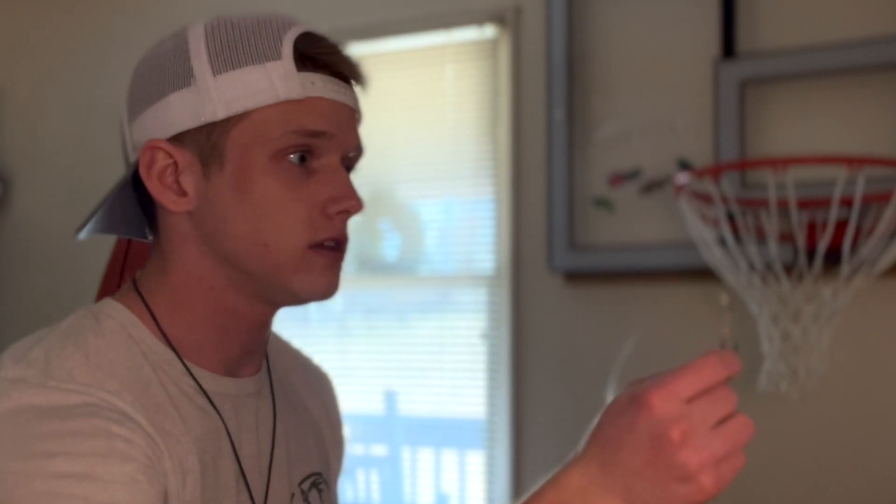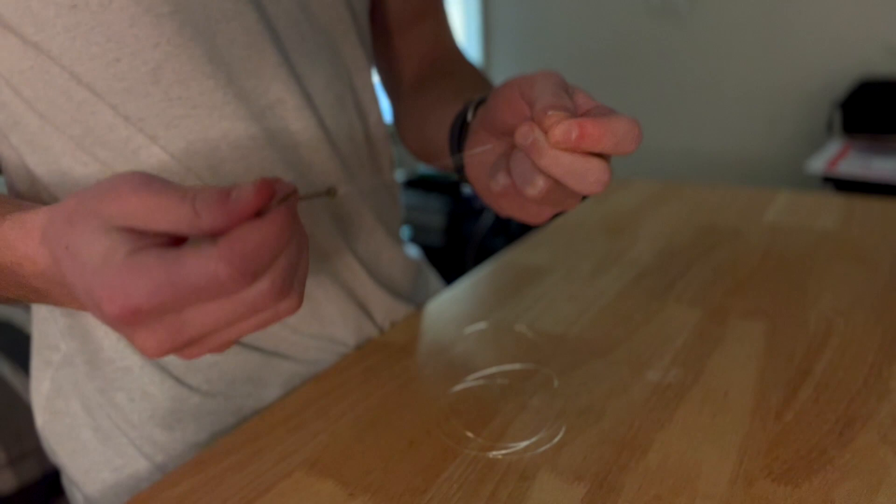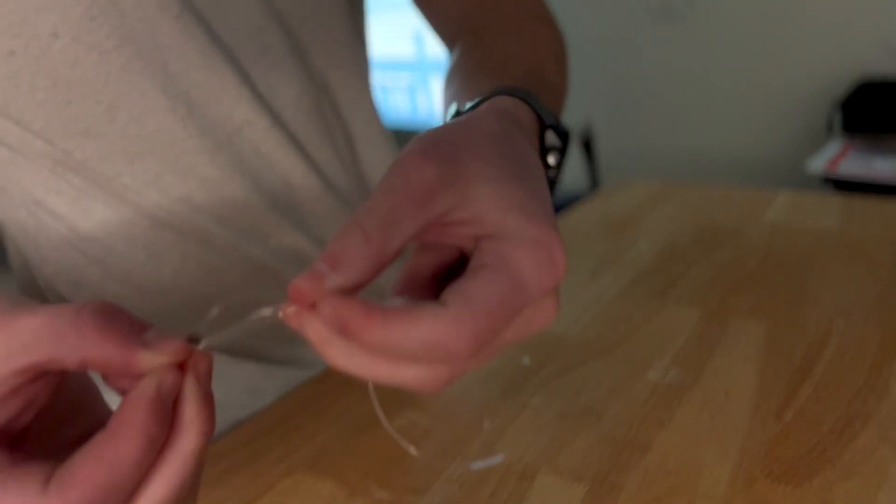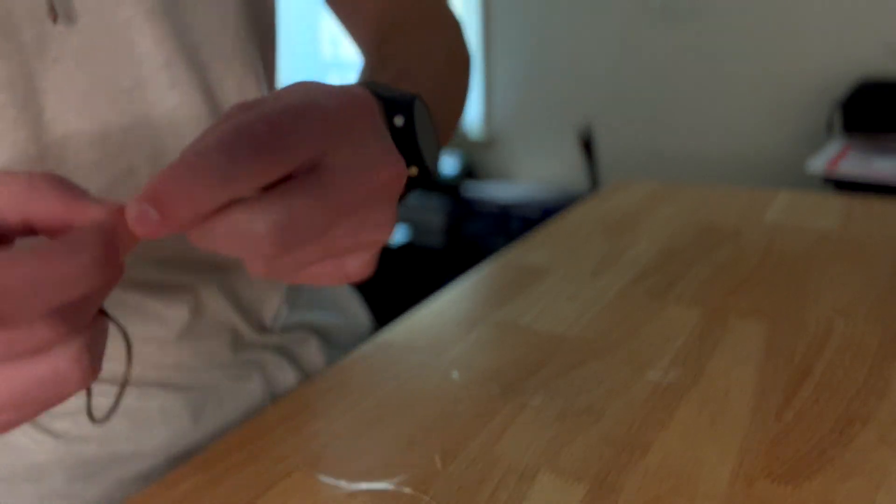The second one is the union knot. You start by running the line through the eye of the hook. Take the excess line and make a loop. Once you've made that loop, wrap it around the main line and through the loop about five to six times.